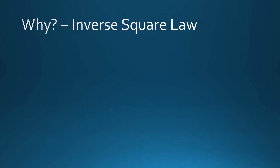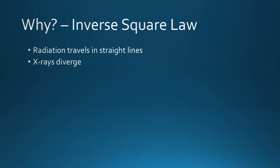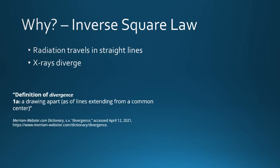Most radiation travels in straight lines and spreads from a source. In the case of x-rays, that source is the focal spot, or the secondary irradiation arising from an irradiated portion of a patient. If you are doing portable work, divergence means that the radiation is emitted from the focal spot and spreads out until it fills its container.